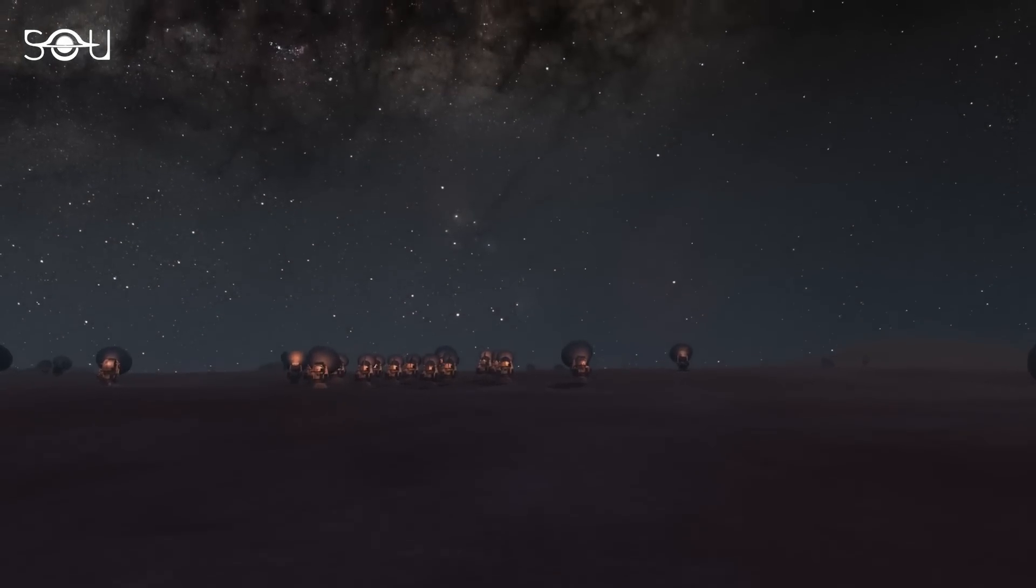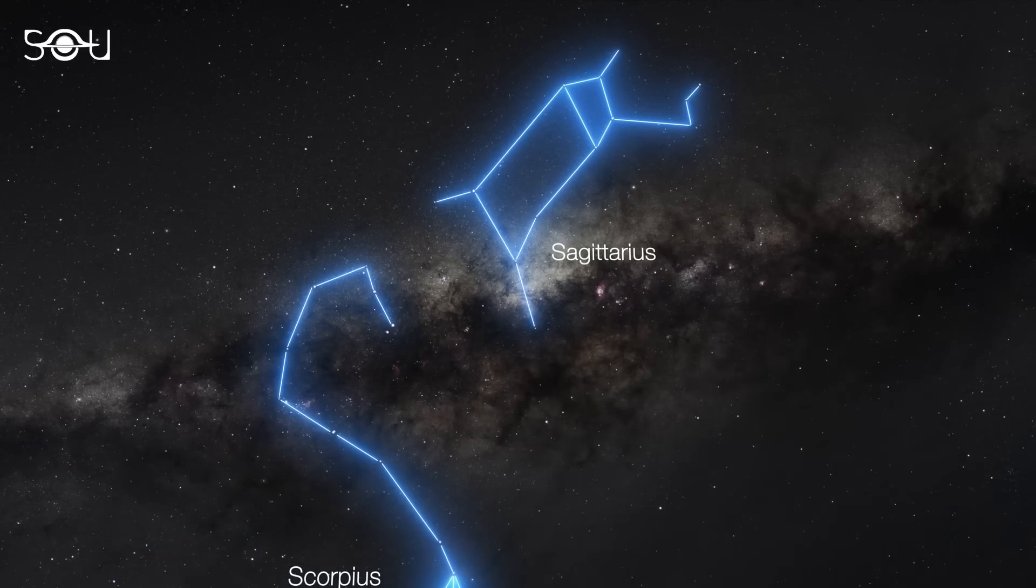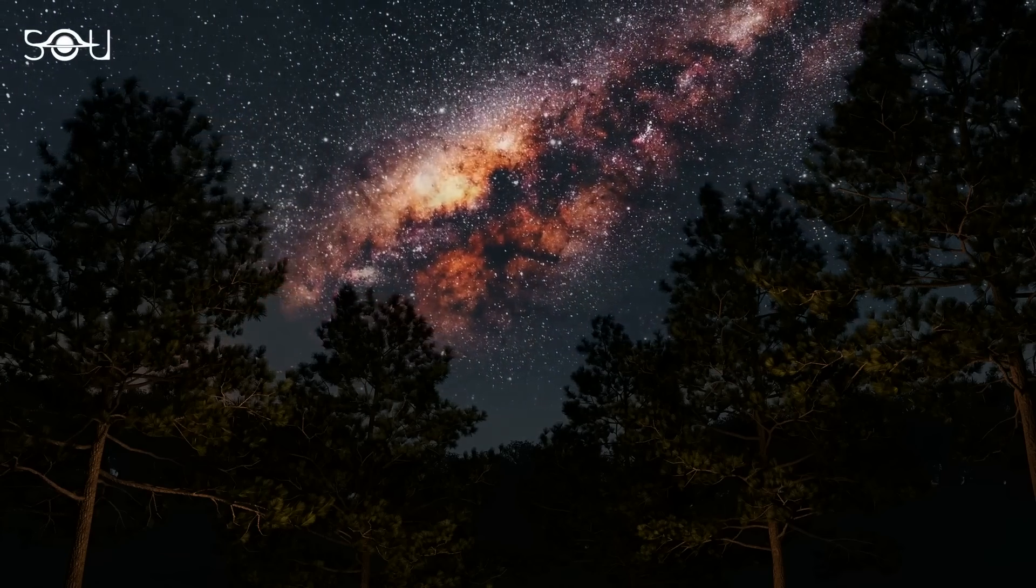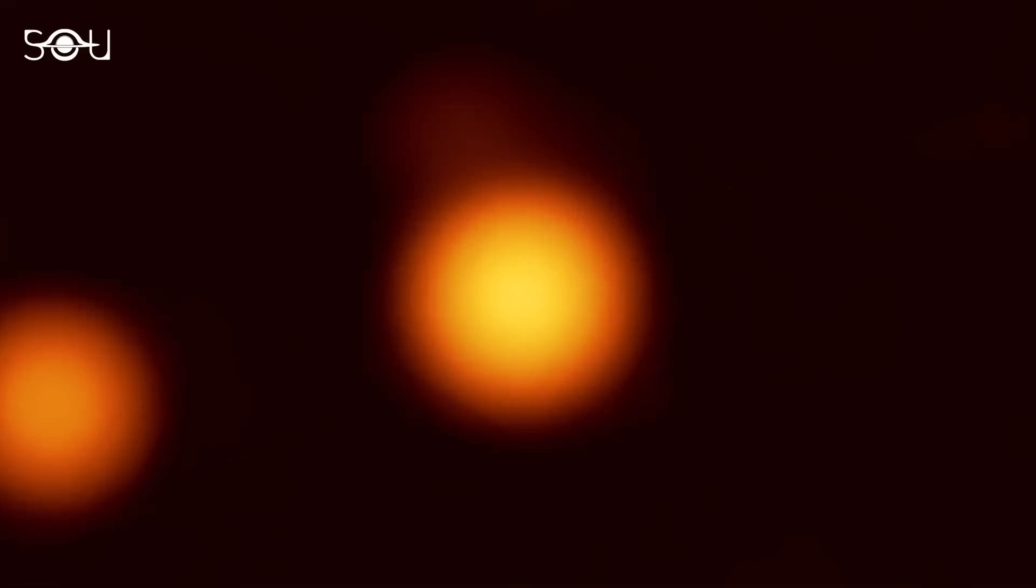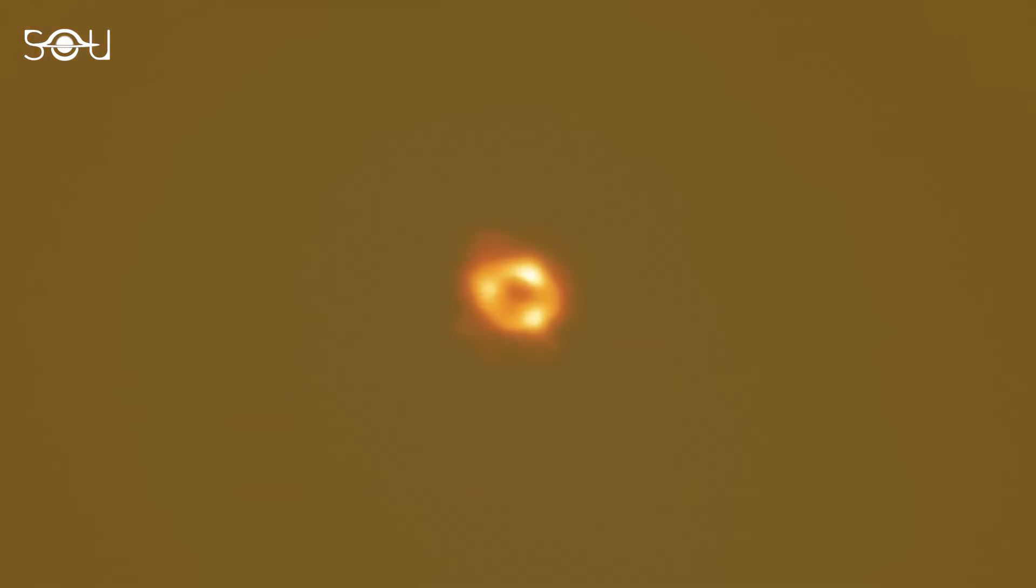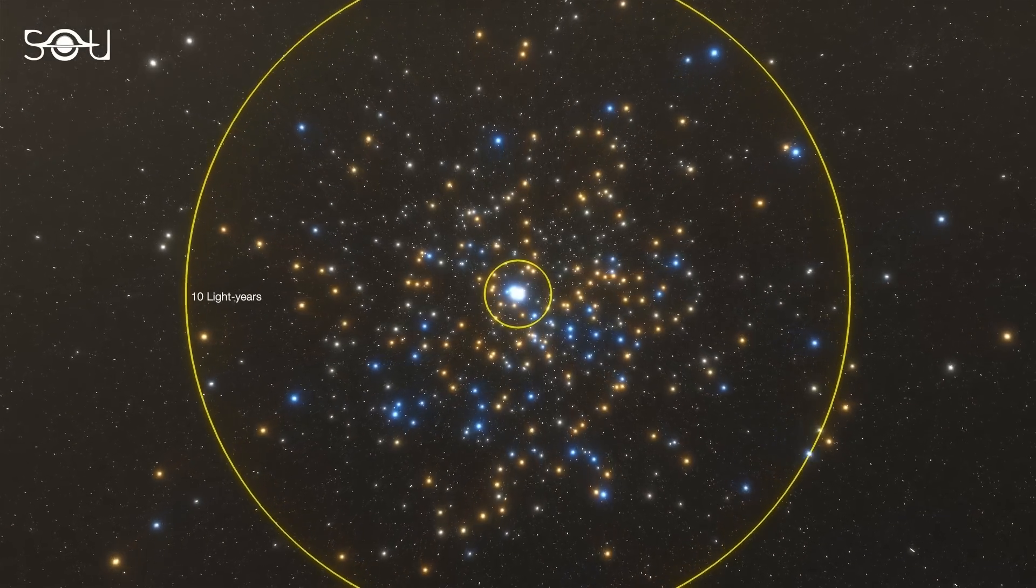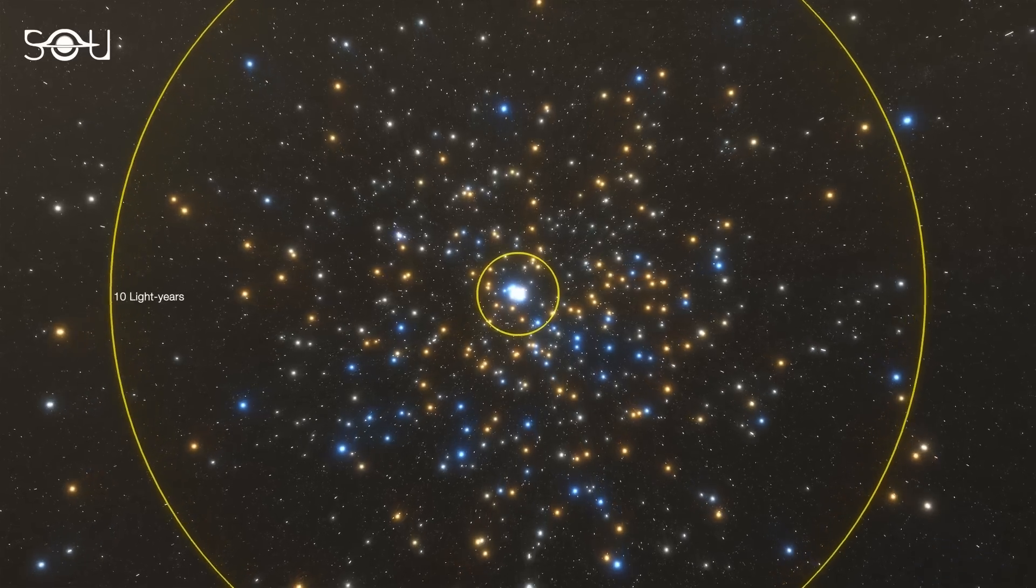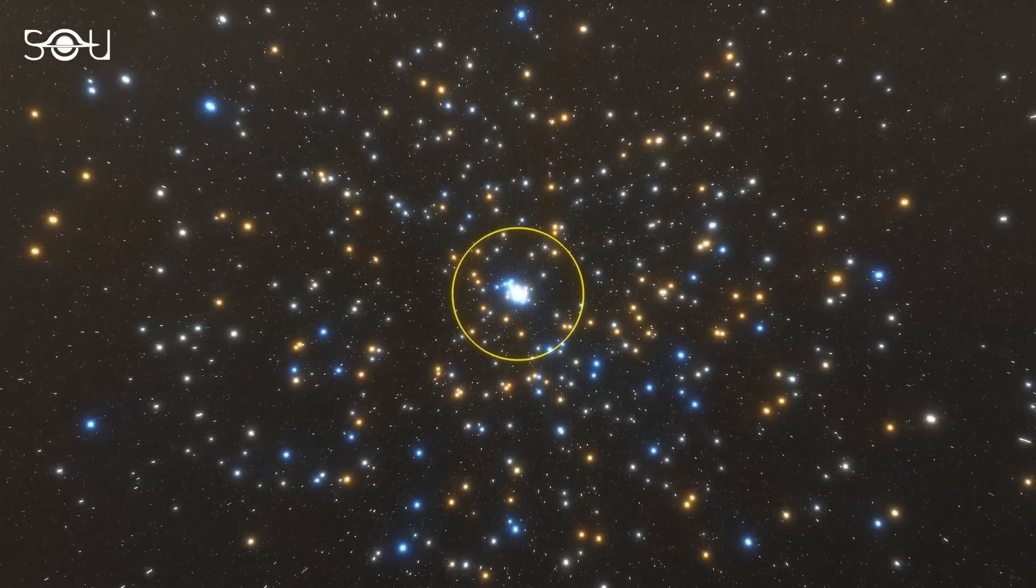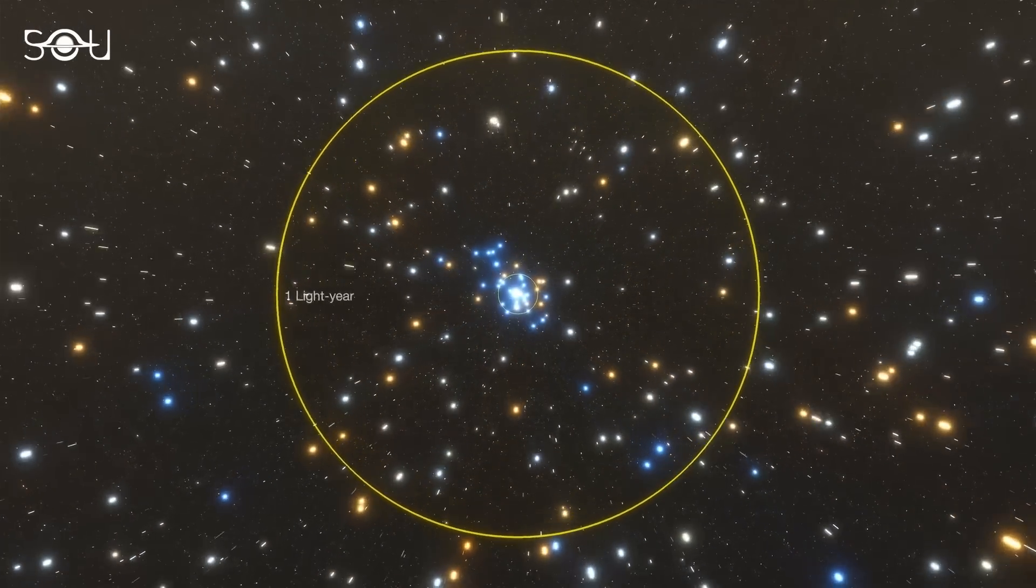The galactic center is roughly 8 kiloparsecs away from Earth in the direction of the Sagittarius and Scorpius constellations. This is where the Milky Way appears brightest in the sky. At the center of this region lies a supermassive black hole known as Sagittarius A star, with a mass several million times that of our Sun. Within a mere 1 parsec of the galactic center, there is an incredibly dense region containing over 10 million stars, primarily consisting of red giants with a significant number of massive supergiants and Wolf-Rayet stars.